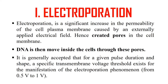First, electroporation. As the name indicates, in this case we use electricity to create pores in the cell membrane, and through these pores DNA can be moved inside the cells. It is generally accepted that for a given pulse duration and shape, a specific transmembrane voltage exists for manifestation of electroporation phenomena — generally an electropotential of 0.5 to 1 volt. We simply apply electricity to the cells; due to the electric field, pores are created in the cell membrane through which the gene of interest moves inside the cells.